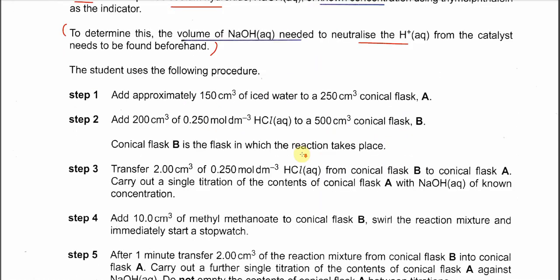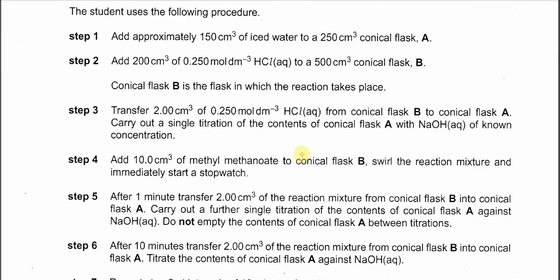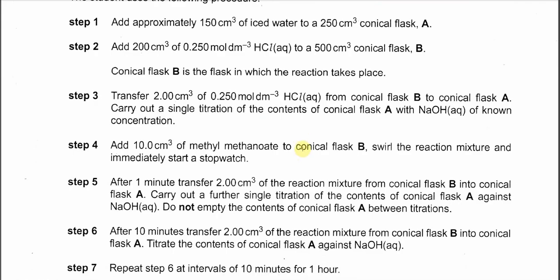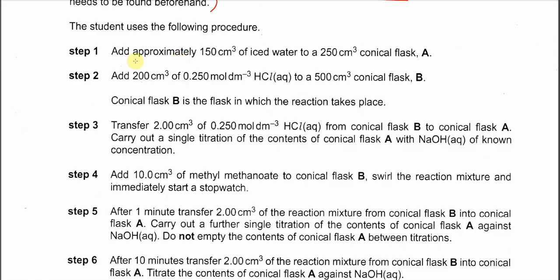Now let's move on to the steps. These steps are quite long, so I'll roughly discuss them and show all the drawings. Step 1: about 150 cm³ of ice water is introduced into a 250 cm³ conical flask, which is flask A. Step 2: add 200 cm³ of 0.25 mol/dm³ HCl into a conical flask, which is flask B. Flask B is the flask in which the reaction takes place.